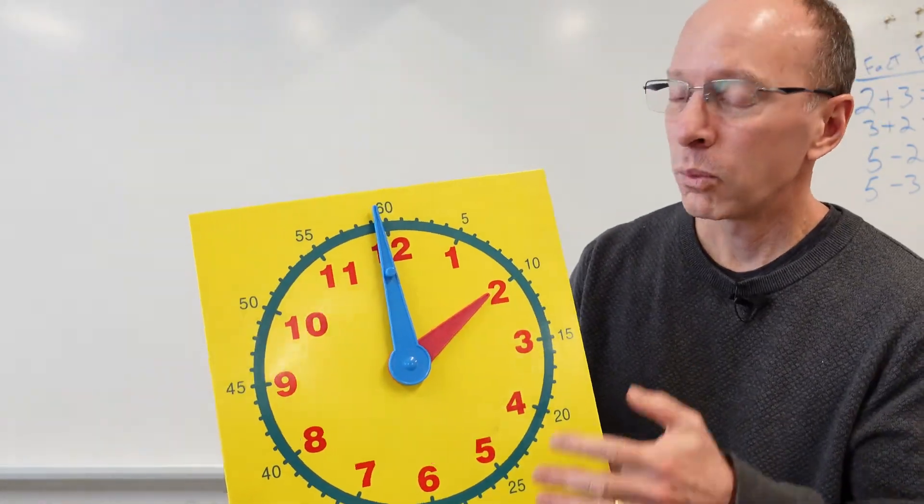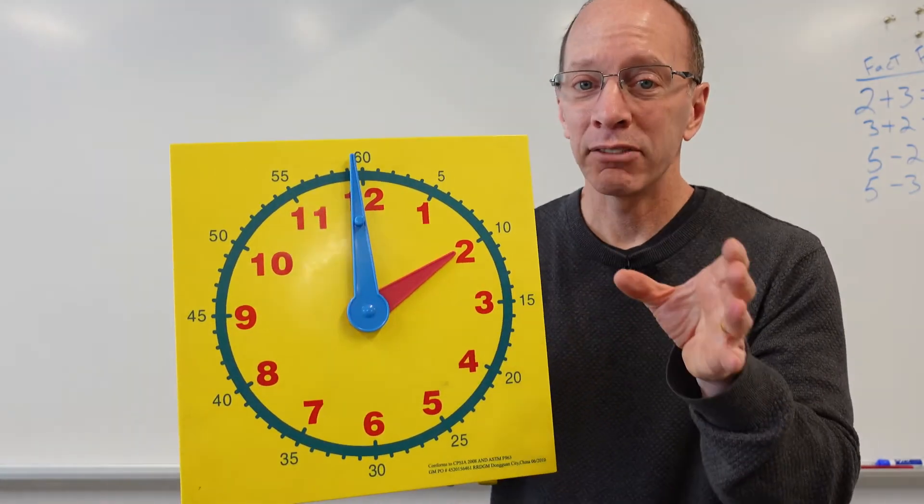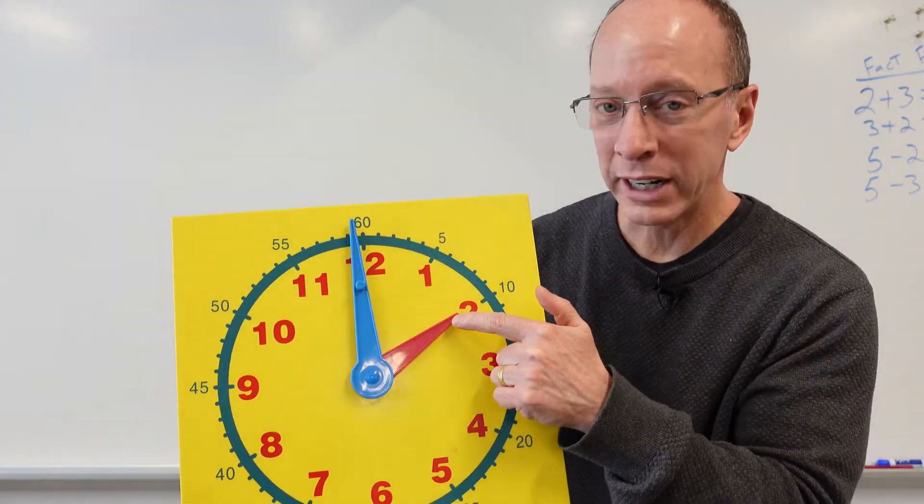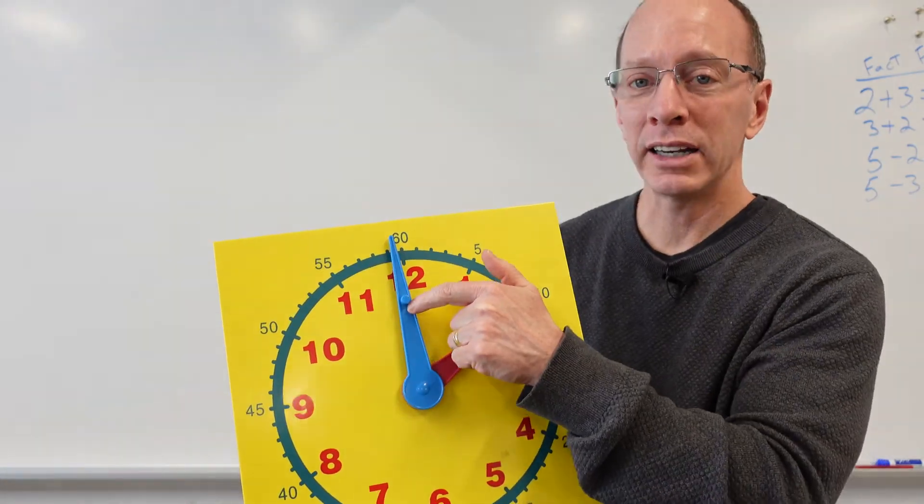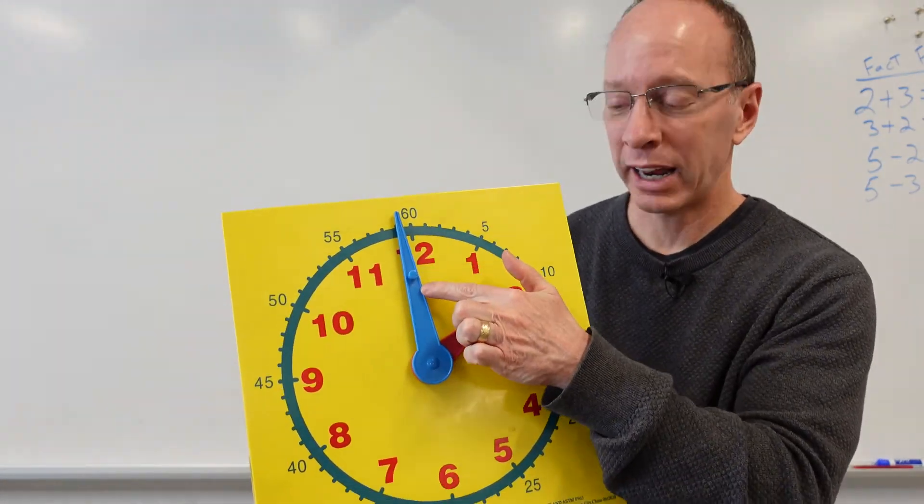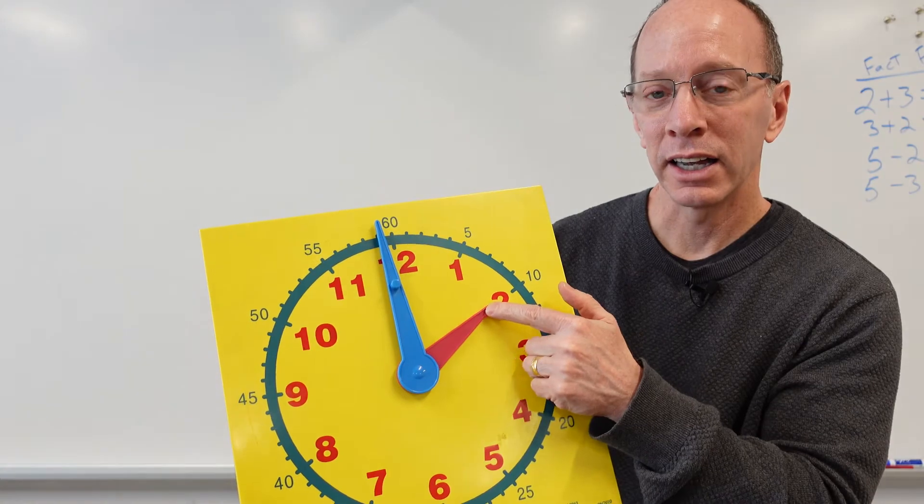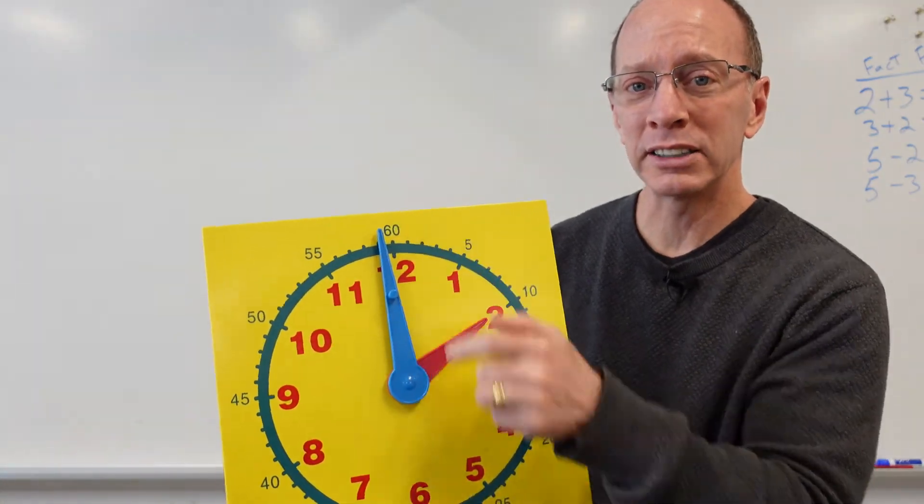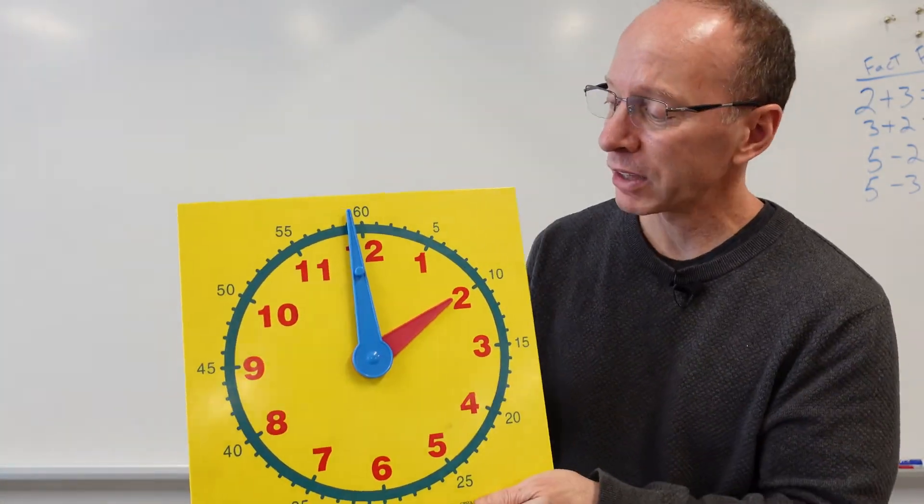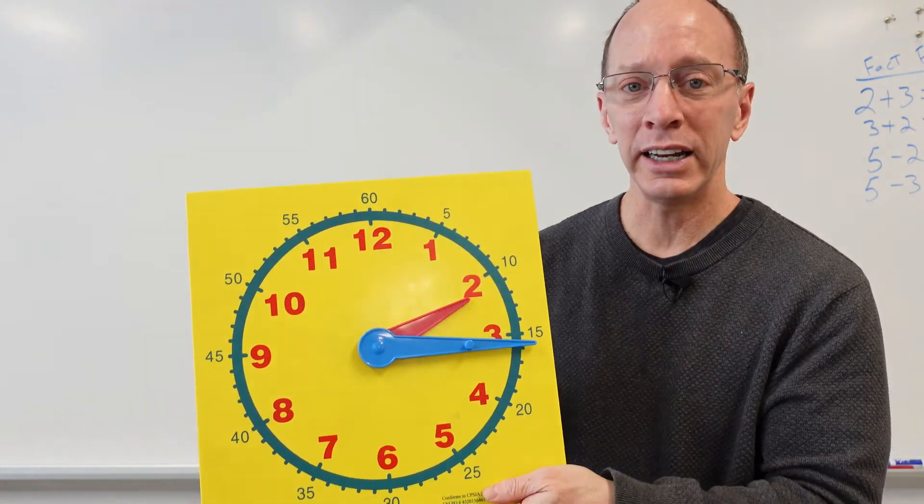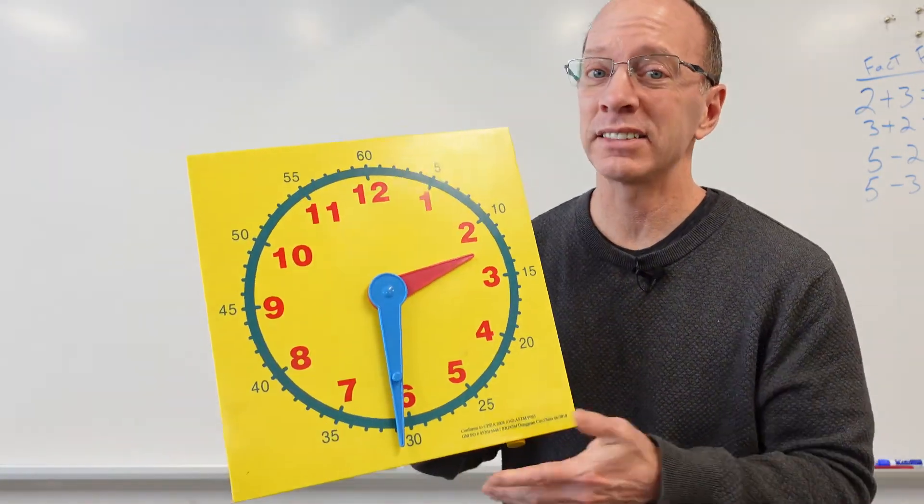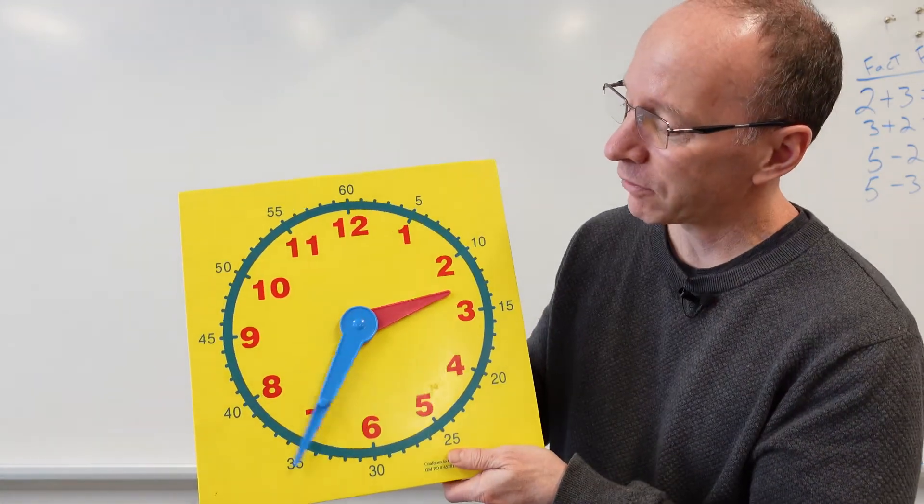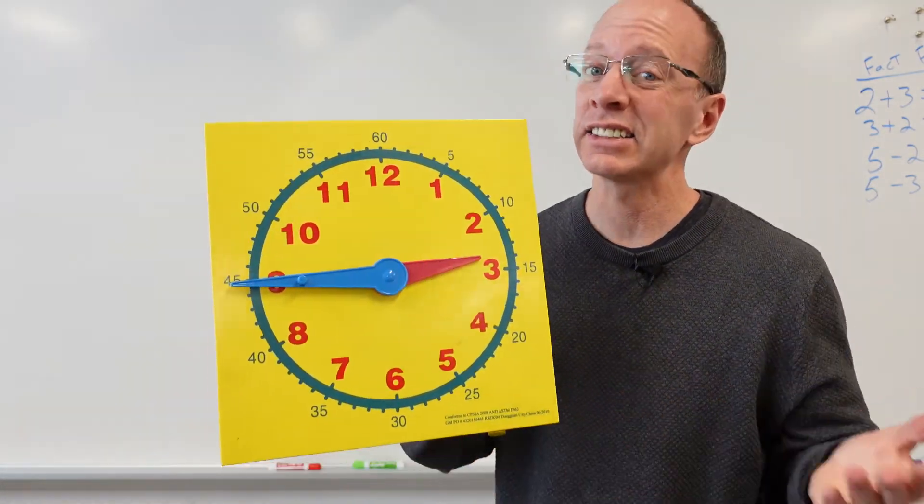So, remember, what we always like to do is we always like to have the ladies go first, so we always read the small hand. This is the lady's hand. This is the man hand, or it's the minute hand, and this is the hour hand. And if the big hand is pointing to the top, it's something o'clock. If it's pointing toward the 3, it's something 15. If it's pointing down, it's something 30. And if it's pointing to the 9, it's something 45.